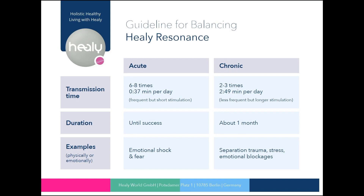The lists for chronic topics are usually sent less frequently but for a longer period of time. In these cases you can send a list two to three times per day into the client's information field for two minutes and 49 seconds for about a month. If the condition of the client shows little change after this period, you can activate an additional analysis list again for one month. Continue trying other databases within the resonance module or a new list from the Aura module.